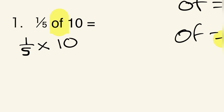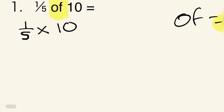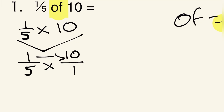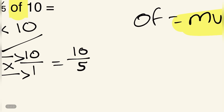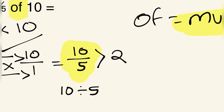So one fifth of ten is the same as one fifth times ten. To do that, we put the whole number over one, giving us one fifth times ten over one. We multiply across, which gives us ten over five. Since the numerator is greater than the denominator, it's an improper fraction. We check for a GCF: ten divided by five equals two. So the answer simplifies to two.